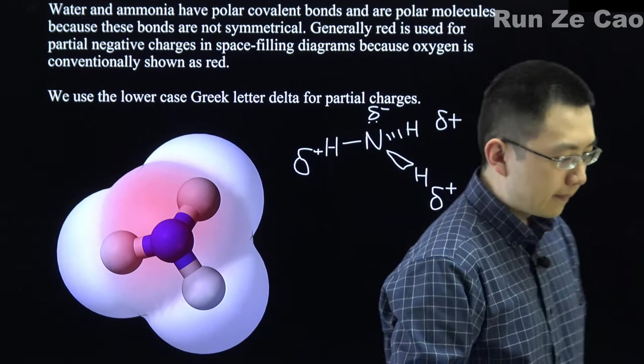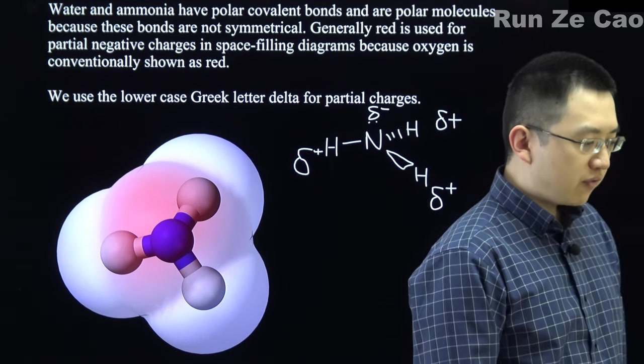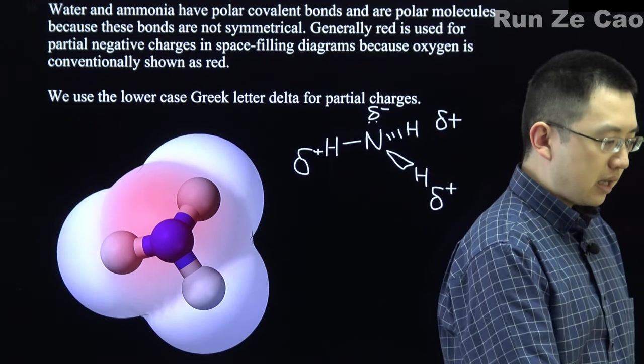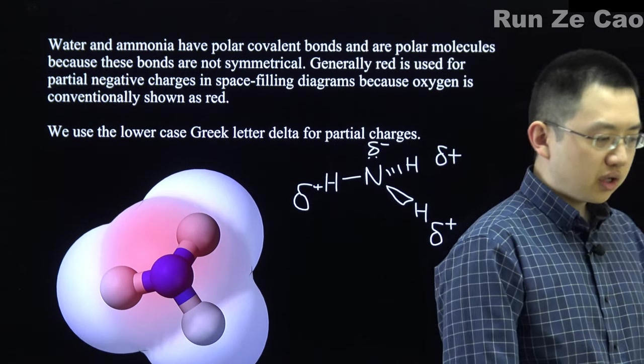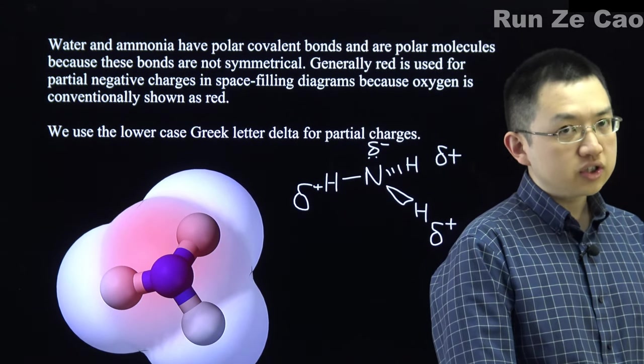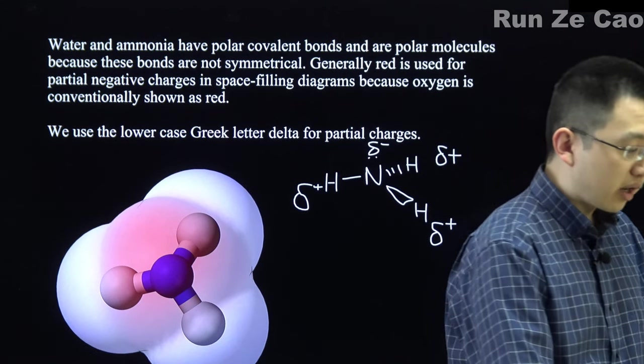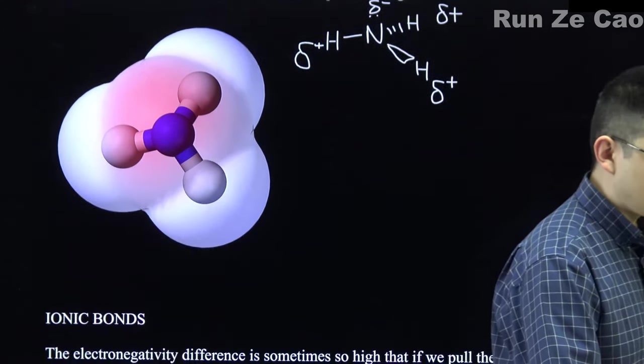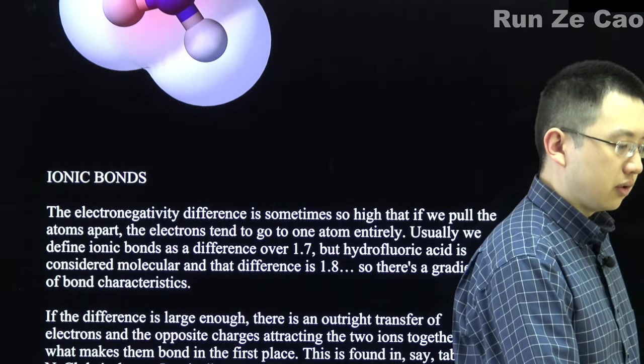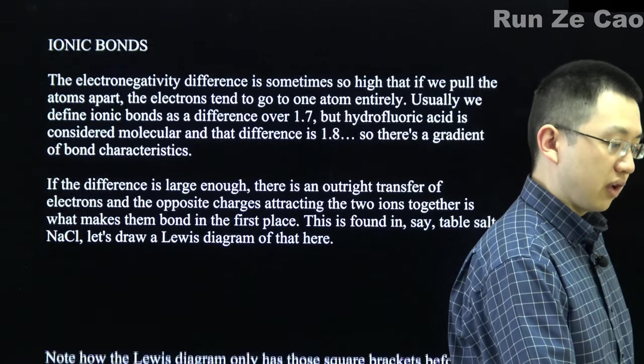Usually for space-filling diagrams we use red for partial negative charges. This is because oxygen is conventionally shown as red, but conventions may vary, so just be careful and pay attention to the actual molecules and atoms involved if you can.